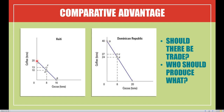On the PPF, the country is operating at production efficiency. The maximum amount of coffee Haiti can produce is 20 tons, and the maximum amount of cocoa is 16 tons if they devote all resources to each good. The Dominican Republic has 40 tons of coffee and 20 tons of cocoa. By looking at these two PPFs, we can introduce absolute advantage and comparative advantage to see who should be specializing in each good.